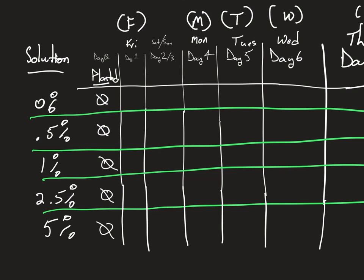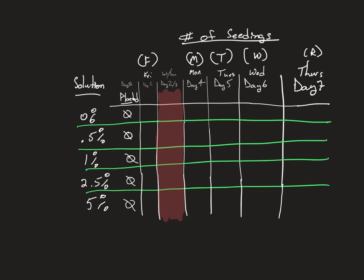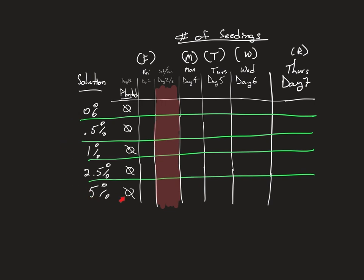Tomorrow, are there going to be seedlings? I don't know — honestly, I don't expect any tomorrow. Monday, Tuesday, Wednesday you'll have some number. Your hypothesis is: are there going to be any seedlings? Do you expect to see any seedlings in the higher concentration solutions? We already set our hypothesis for the first one.